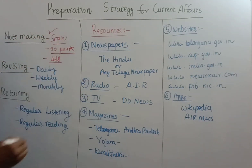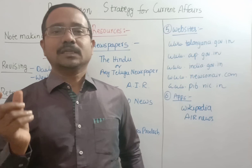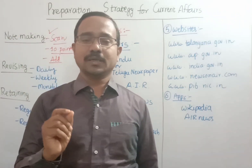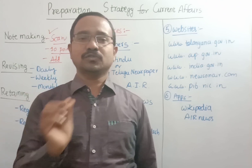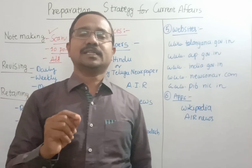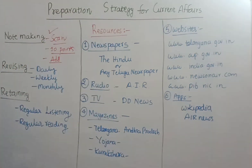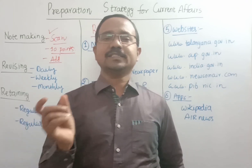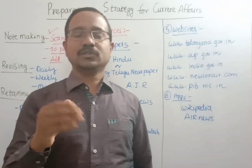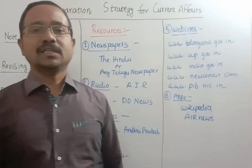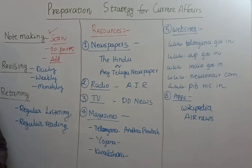This completes the first step of note-making. For the second step, when making current affairs notes, you can prepare a single notebook for all current affairs, or you can write a separate notebook for each current affairs topic. For example, you can maintain a small 100-page notebook for polity news, another for economy, and likewise. You can also use loose sheets for easy revision. You can organize your current affairs notes either date-wise or topic-wise — you can construct your own strategy according to your preference.